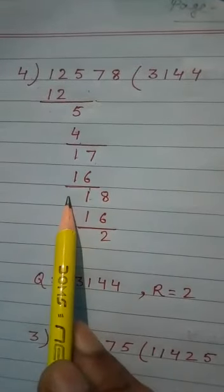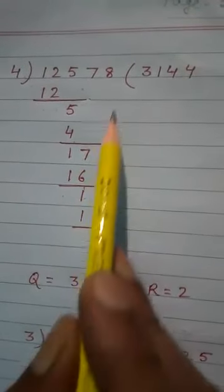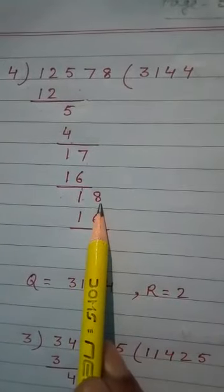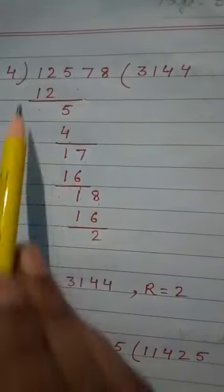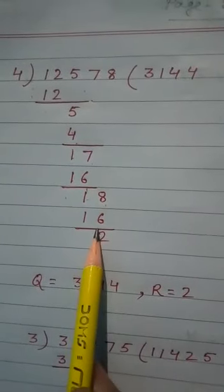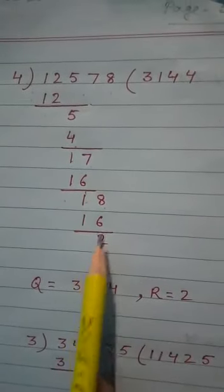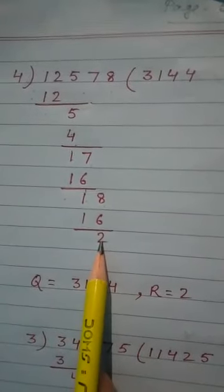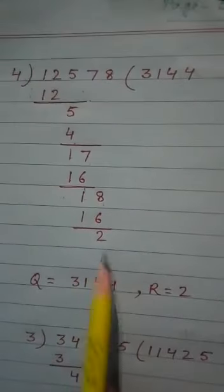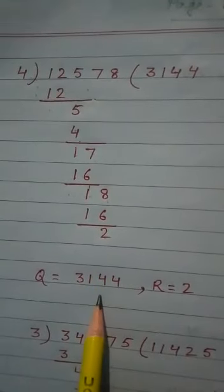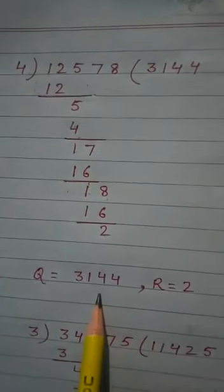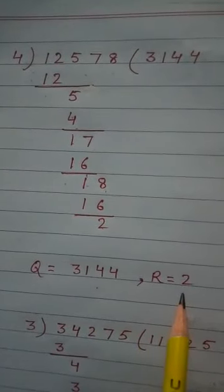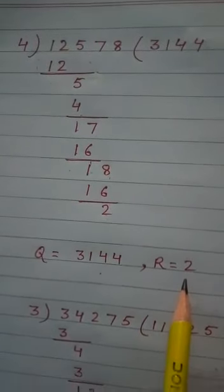And 1-1 is 0. This 8, we write 8 here. So 18, and 4×4 is 16. So 8-6 is 2. Now quotient is 3,144 and remainder is 2. Got the answer.